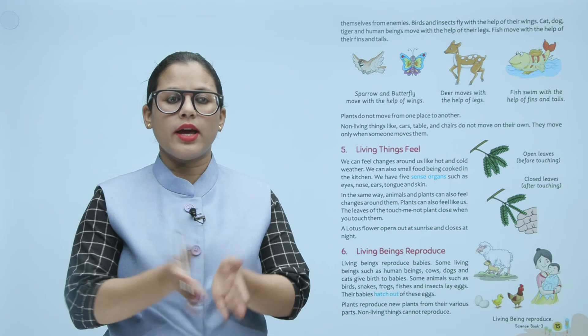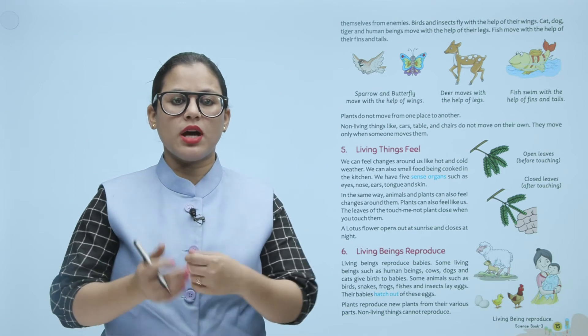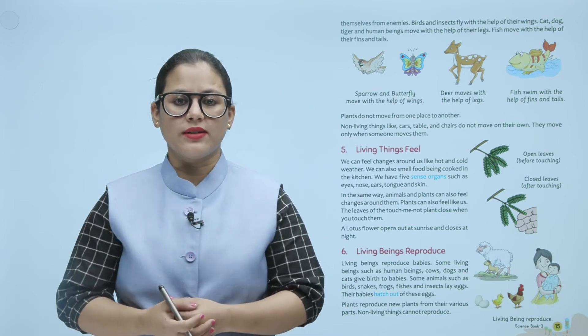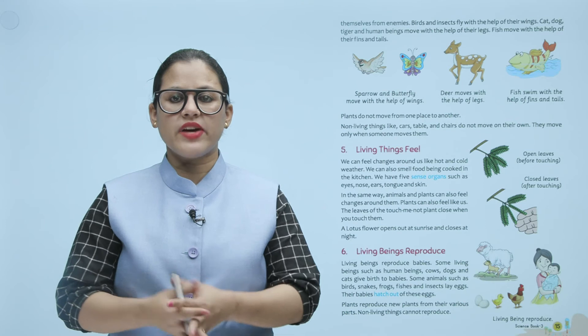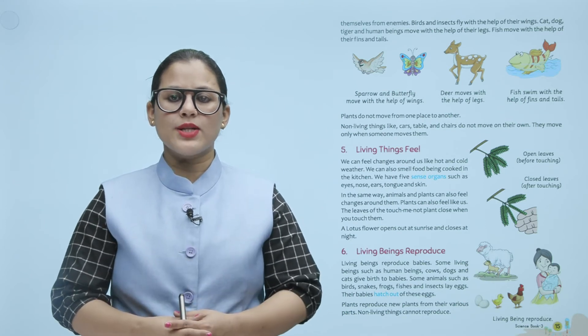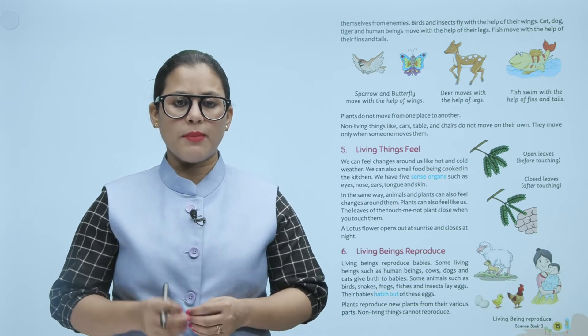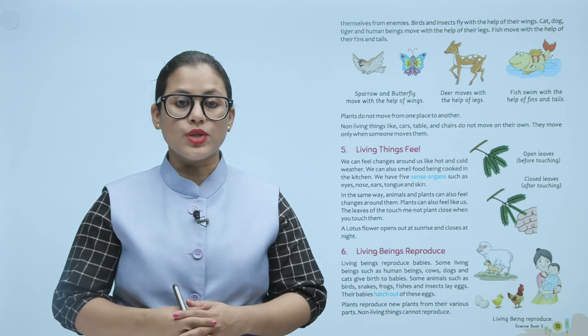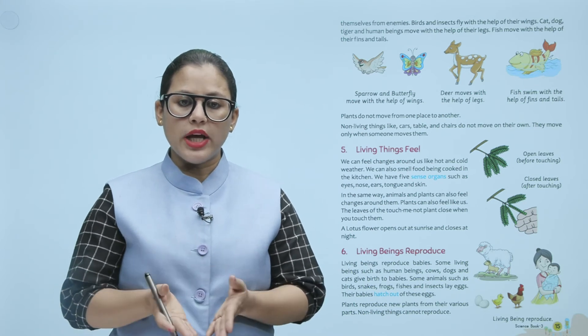Jitne bhi living beings hain, woh apne aas paas mein hone wale changes ko feel karte hain. Jaisa ki hot weather hai ya cold weather hai. Aapke kitchen mein khana ban raha hai, aap usko smell karte hain. Hamare paas five sense organs hain. Isi tarah se animals and plants — inke aas paas jo bhi changes hote hain, inhein woh feel karte hain. Plants bhi feel karte hain, jaisa ek plant hota hai touch-me-not — aap use touch karenge toh iske leaves close ho jaati hain. Lotus flower sunrise pe apne aap khulta hai, aur night mein woh apne aap close ho jaata hai.